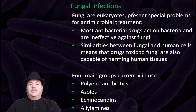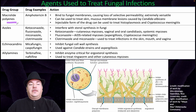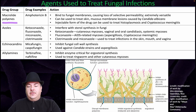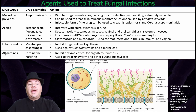Fungi are eukaryotes which present special problems for antimicrobial treatment. Most antibacterial drugs are ineffective against fungi. Similarities between fungi and human cells means that drugs toxic to fungi are also capable of harming human tissues. The four major antifungal groups currently in use include polyenes, azoles, echinocandins, and allylamines. Polyenes disrupt the membrane of the fungi; azoles interfere with sterol synthesis; echinocandins inhibit cell wall synthesis; and allylamines inhibit ergosterol synthesis.